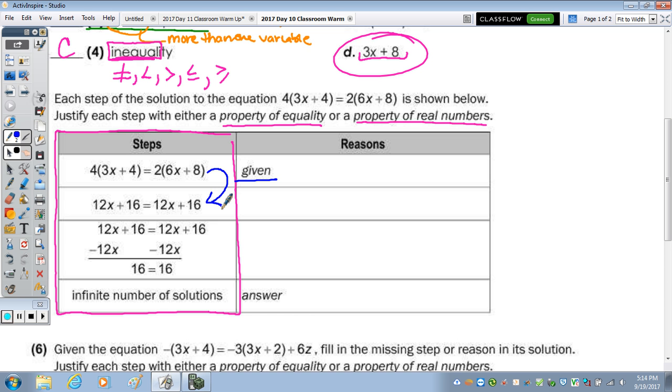To go from step number 1 to step number 2, is the distributive property. So 4 times 3X, 12X. 4 times 4, 16. 2 times 6X is 12X. And 2 times 8 is 16. So number 1, is the distributive property. Or the first line, it's not numbered.